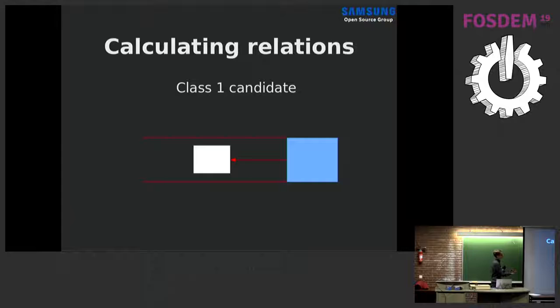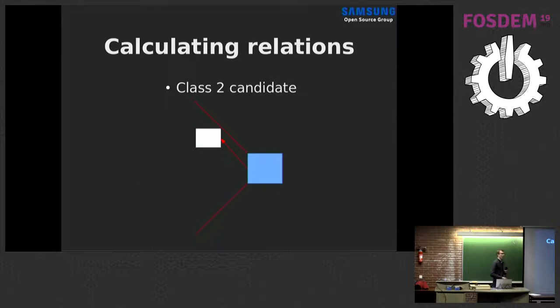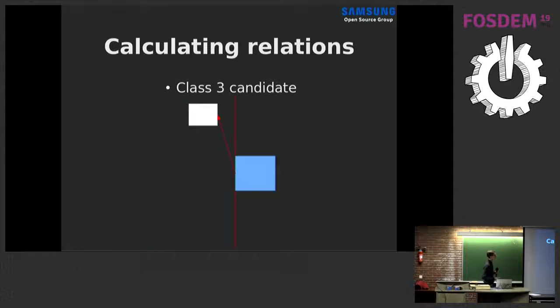The classes can be divided like this: what you see here is our reference widget and our candidate. What showed up when we've been talking to users is that if the white widget here is in the shadow of the blue widget, which means directly on the left side and not above or below the reference widget, then the user expects this widget to be, in this case, the left widget. A class one candidate. A class two candidate, however, would be within those two angles and would not be in class one, obviously.